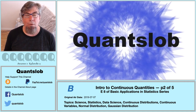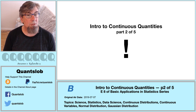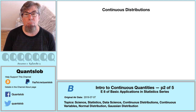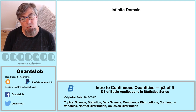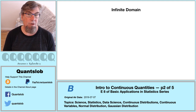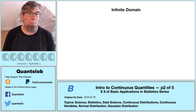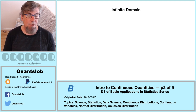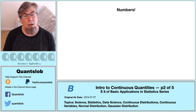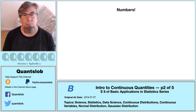Greetings and welcome to another installment of QuantSlob. This is eight in our basic application series — part two in our mini-series on continuous quantities. As we saw in part one, continuous distributions arise when the domain of values for a quantitative variable or attribute is continuous like a tabletop. In most settings, a continuous quantity will have an infinite domain. We've already encountered infinity here on QuantSlob going all the way back to the foundational series. However, to fully harness the power of continuous distributions, we not only re-encounter infinity, but we need to manage it. Fortunately, the theory of managing infinity in this way has already been taken care of for us.